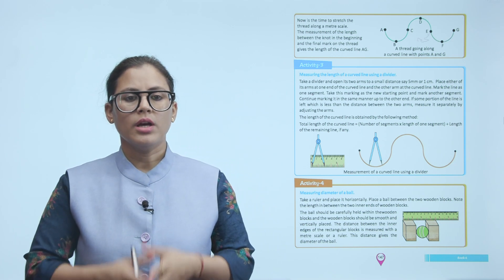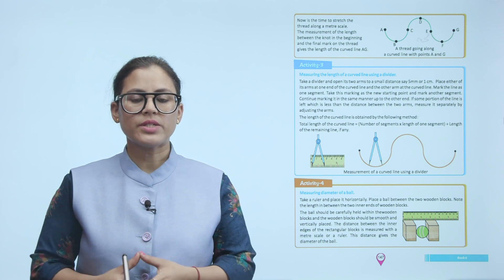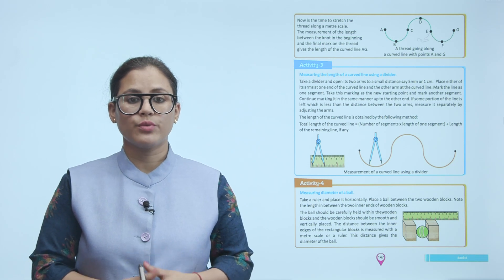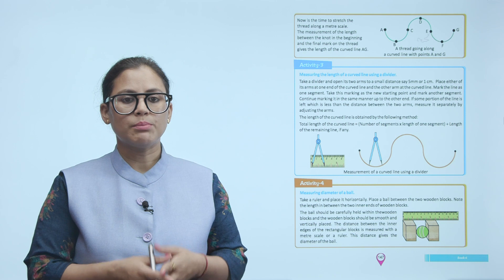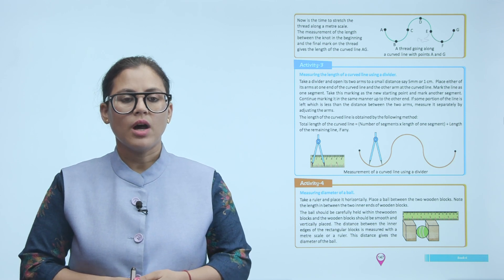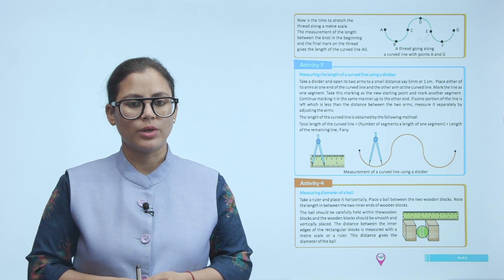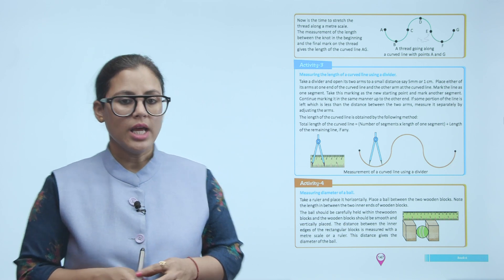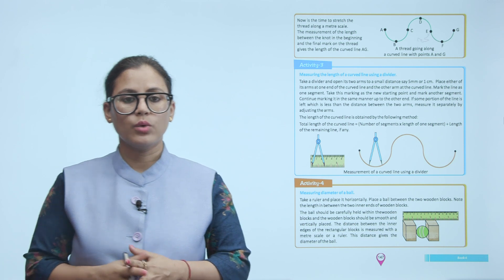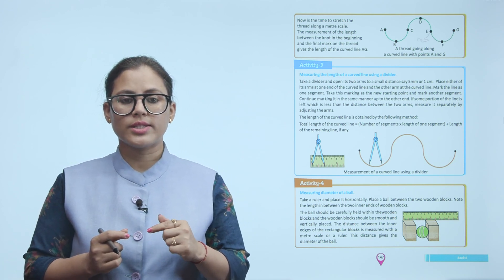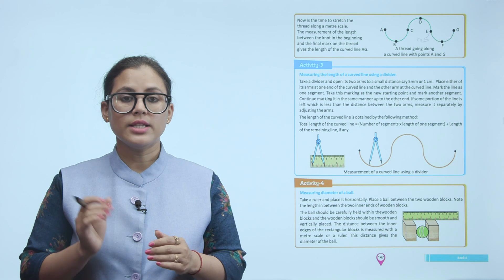Activity 4: Measuring the diameter of a ball. Take a ruler and place it horizontally. Place a ball between two wooden blocks. The ball should be carefully held within the wooden blocks, which should be smooth and vertically placed. The distance between the inner edges of the rectangular blocks is measured with a meter scale or ruler. This distance gives the diameter of the ball.